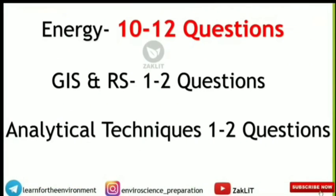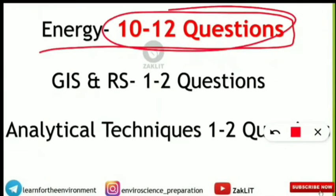The energy unit is very important — 10 to 12 questions are asked every time in UGC NET Paper 2 environmental science. This includes all energy topics, India's renewable and non-renewable energy targets and goals, and energy numericals. Solar and wind energy numericals involve blade speed, blade size, and related calculations from previous practice problems.